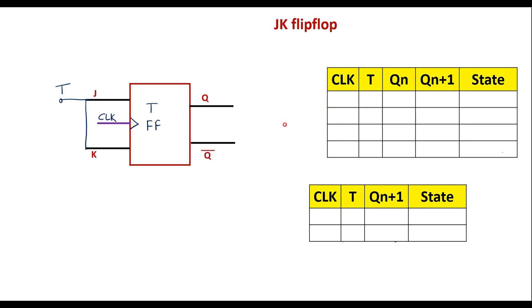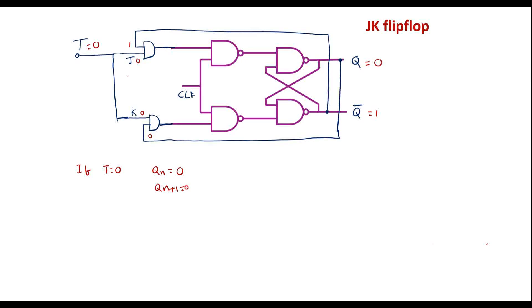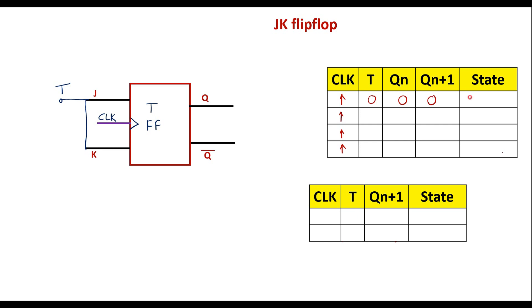Now let me analyze the circuit considering the positive edges of the clock. If T equals 0 and Qn equals 0 — that is, the present state of the flip-flop is 0 — then Q bar will be 1. With T equal to 0, both J and K inputs will be 0. In a JK flip-flop, when both inputs are 0, there is no change. Therefore, Qn+1 equals 0 — no change.